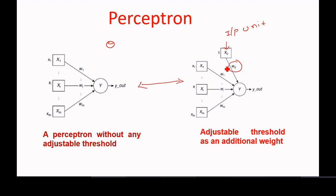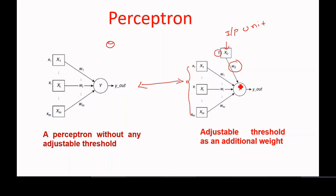Because of x0 and w0, we get the adjustable threshold. The input to this additional input unit x0 is always fixed at one, unlike the other input units which receive regular inputs. The corresponding weight on the link from this input unit to the processing element is w0. We will see this more clearly with the help of equations.